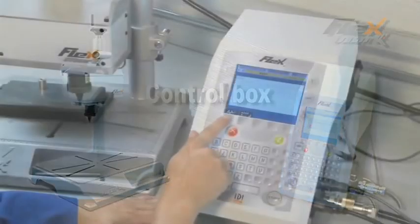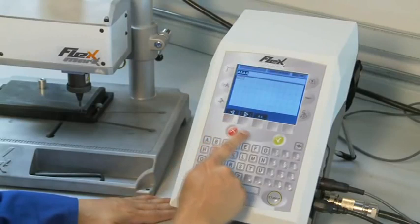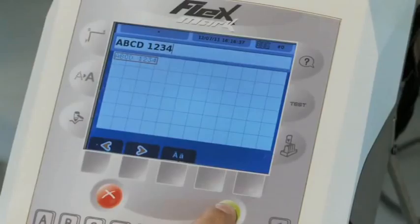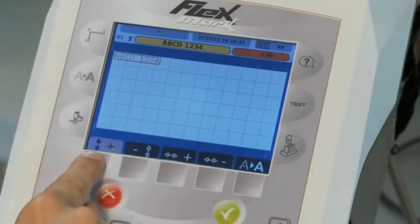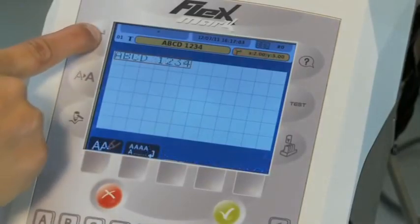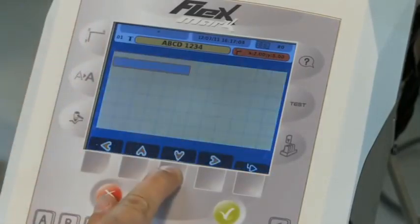The Flexmark software is user-friendly and intuitive. It is ideally suited for industrial direct part marking applications. The embedded software is very simple to operate, easy and fast to program and can be used by anyone, regardless of experience.